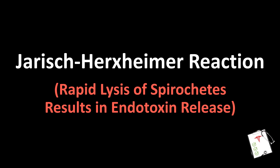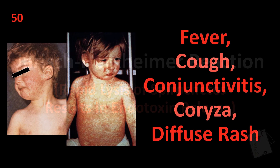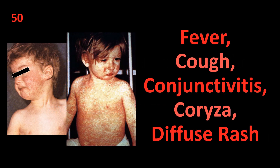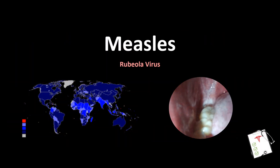Number 50: Fever, cough, conjunctivitis, coryza, diffuse rash. Answer: Measles — rubeola virus.